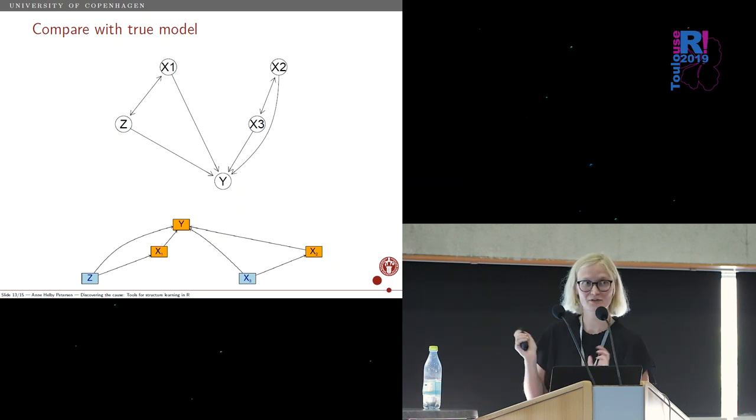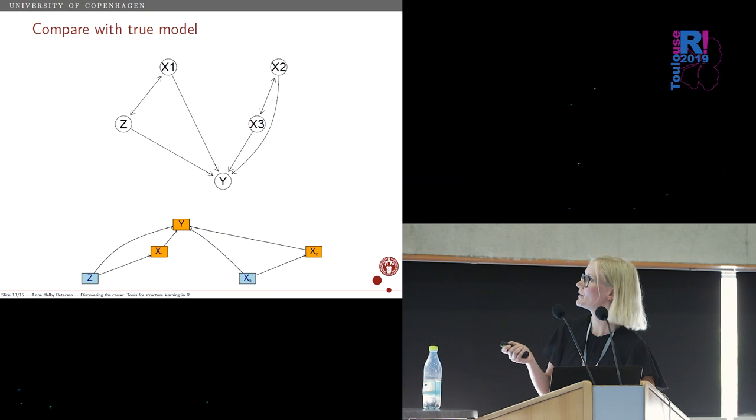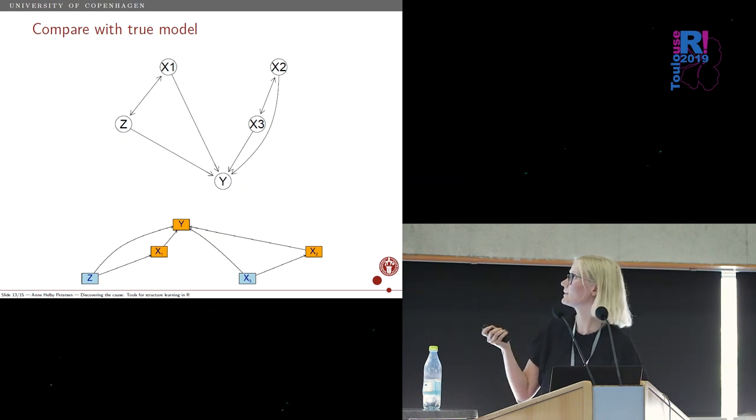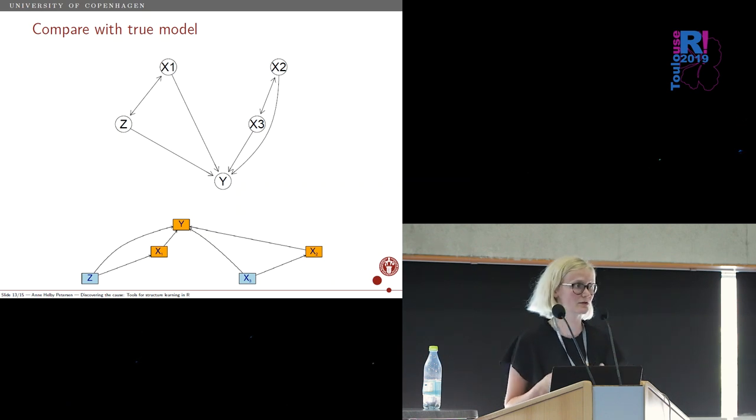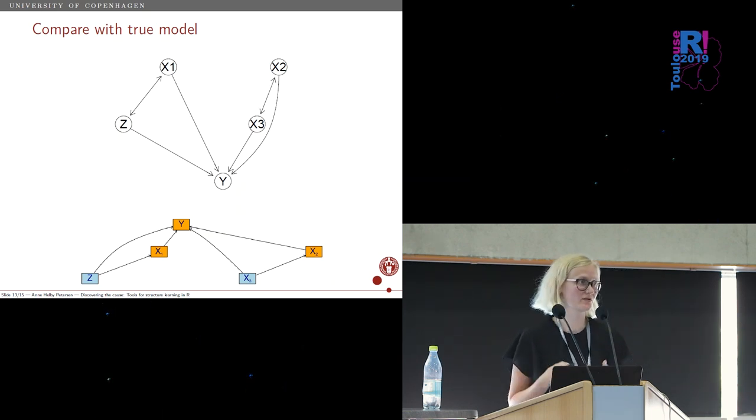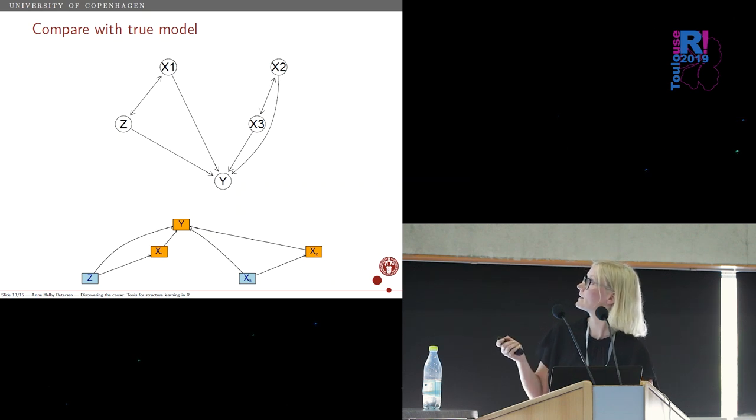We can also compare it with the data that it actually came from because this was simulated data, so I do know the data generating mechanism. It looks like this. If you stare at that for a long time, you might realize that all the edges are the same. The only difference is that here and here we have double-directed arrows in the learned model but not in the true one. So it actually came very close to the structure that generated this data. Causal discovery actually does work, at least in some cases. But in two of the relationships here, it doesn't know the direction. That's not a bug, that's a feature—it shows you this is not learnable from the data.